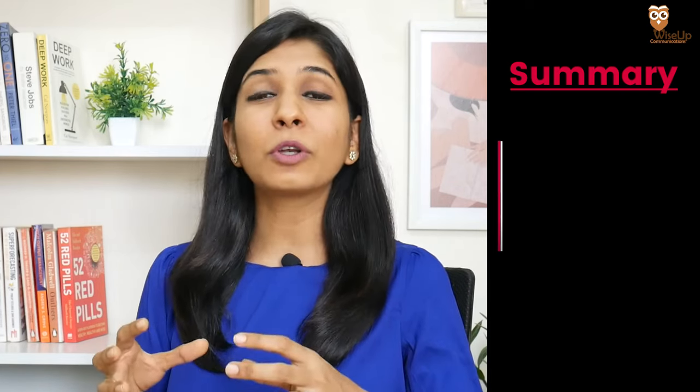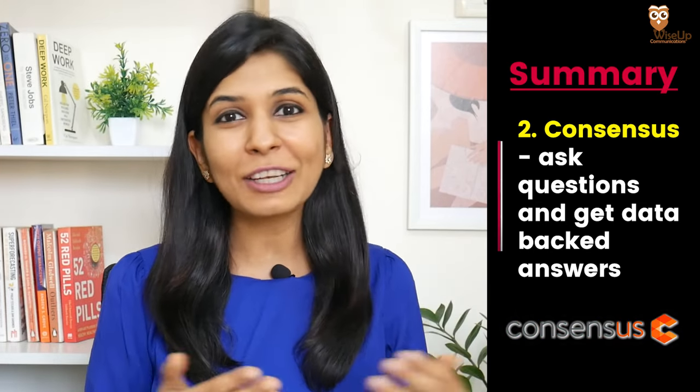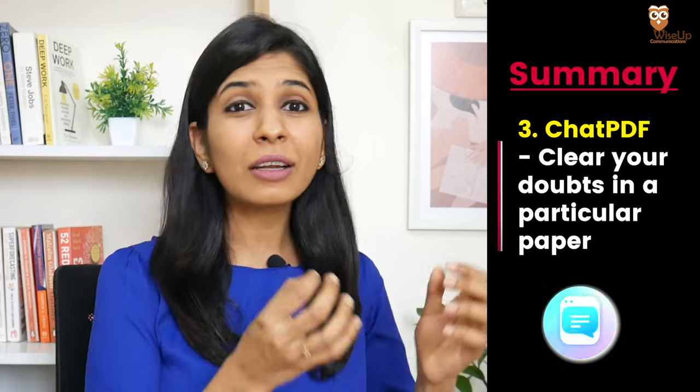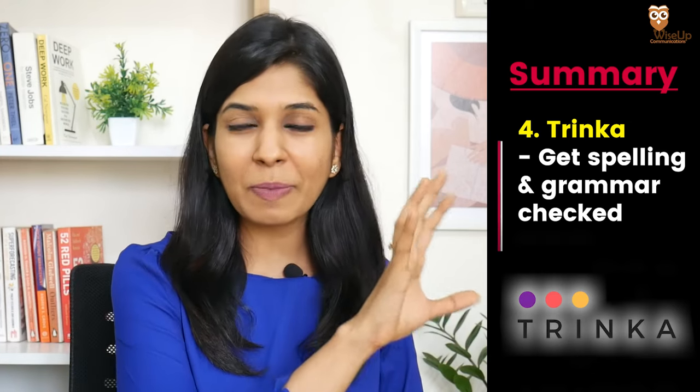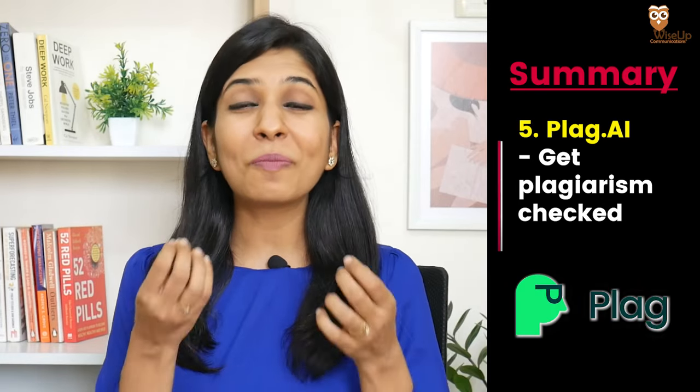So guys, that's all I wanted to share with you today. For your research, you can use Research Rabbit to look for new papers and manage your literature. If you want to understand a topic completely, you can use Consensus to get your doubts cleared. If you're not able to understand a particular research paper or want it summarized quickly, use Chat PDF. When you sit down to write your own research paper, use Trinka to get its spelling and grammar checked. And finally, just before submitting to a journal, get it plagiarism checked with Plaige.ai. In this way, you can really quicken the research process and publish more papers.